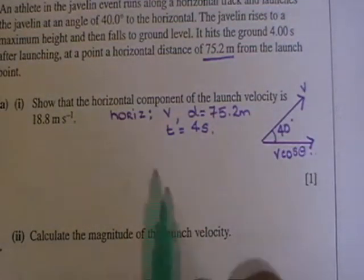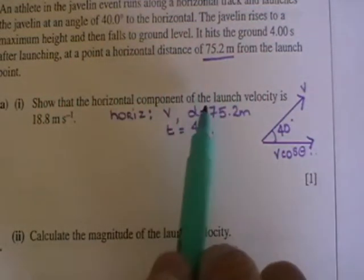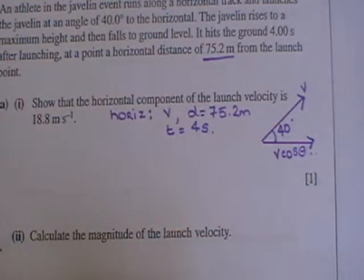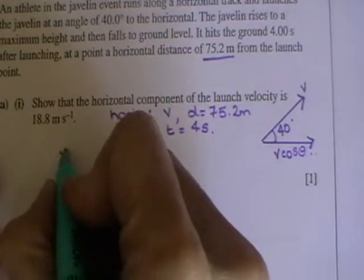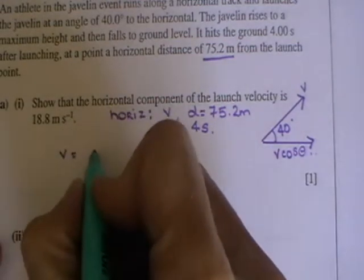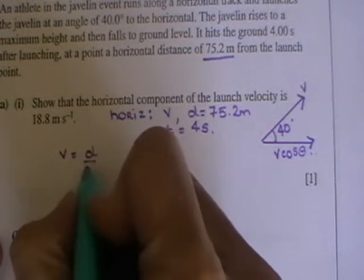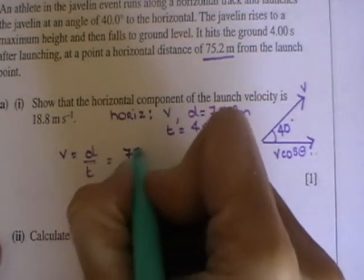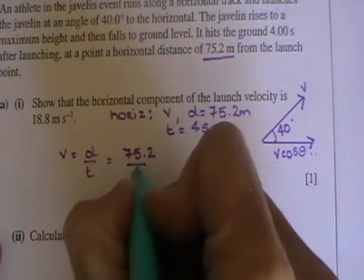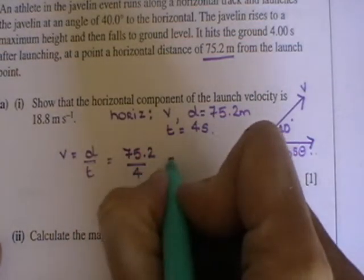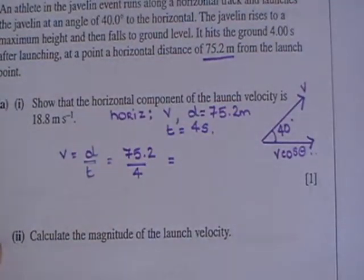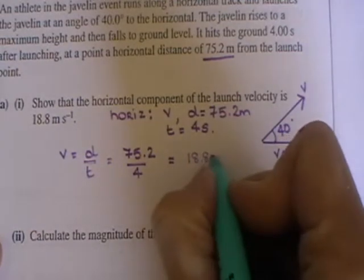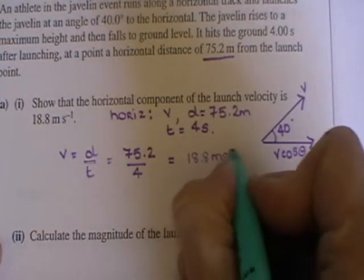It's very helpful if you've got lots of information in this question and you're wondering how you're going to find this out, write down things that you do know. Horizontally, the only equation you use in projectiles is velocity is displacement or distance over time. The displacement is 75.2 metres and the time is four seconds. That gives you an answer of 18.8 metres per second.